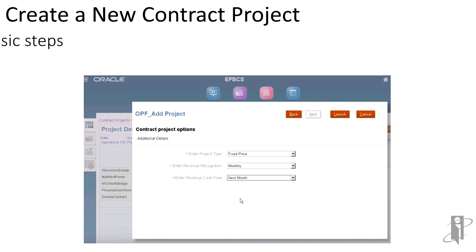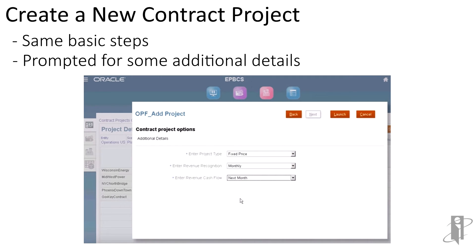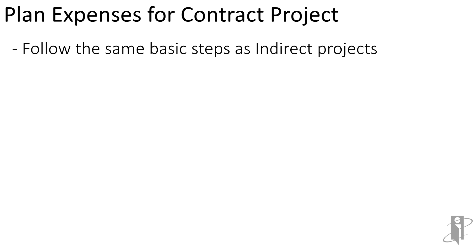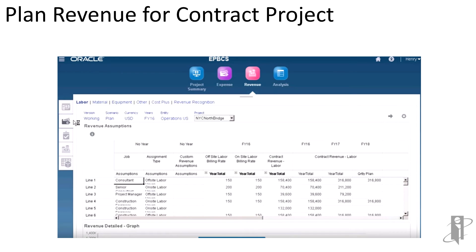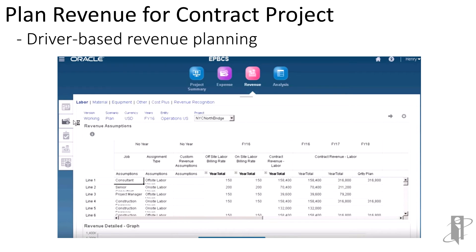To create a new project for contract, I go in and add a project. I'll tell it the type of project — maybe it's fixed price, maybe it's cost plus. When am I going to be able to recognize the revenue? Maybe it's monthly, maybe it's on some milestone basis. When is the revenue going to start coming in? If I want to plan expenses for those contract projects, it's fundamentally the same steps as for indirect projects — I will do labor and then the direct expenses that are not labor-specific. Planning revenue is a little more complicated based on the type of revenue. It could be time and materials — how many hours each person expects to put in. It'll give me different options for calculating that revenue. It is entirely driver-based.